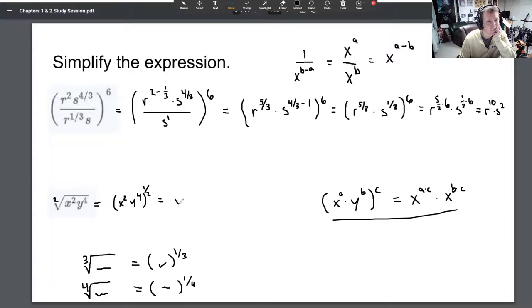We've got x squared, so we take the two and multiply it by the one half. We've got y to the fourth, so we take that four and multiply it by one half. Half of two is one. Half of four is two. That's it.